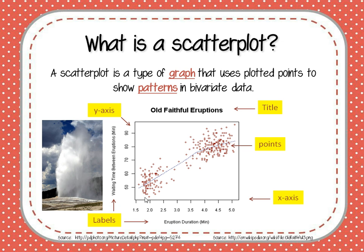As we look at this scatterplot, it's starting to tell us a story. I see two real clusters of data emerging. I see this cluster of points here of short eruptions, and when these eruptions are short — meaning less than 2 and a half or 3 minutes — generally the amount of time you have to wait until the next one is also shorter. But when the eruption lasts 4 minutes or more, you're going to have to wait longer until the next eruption occurs. So the whole point of this scatterplot is to show the relationship between the amount of time that Old Faithful erupts and how long you have to wait between eruptions.